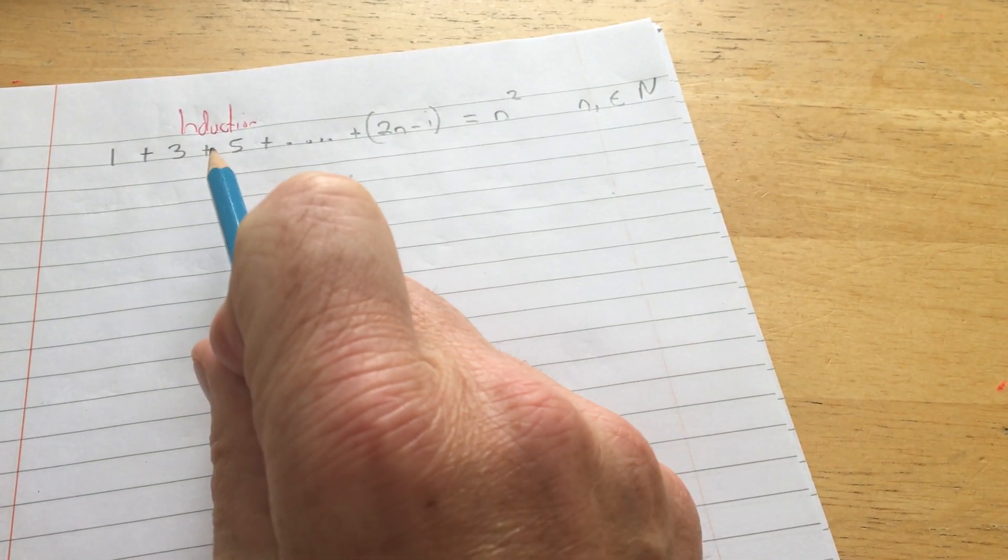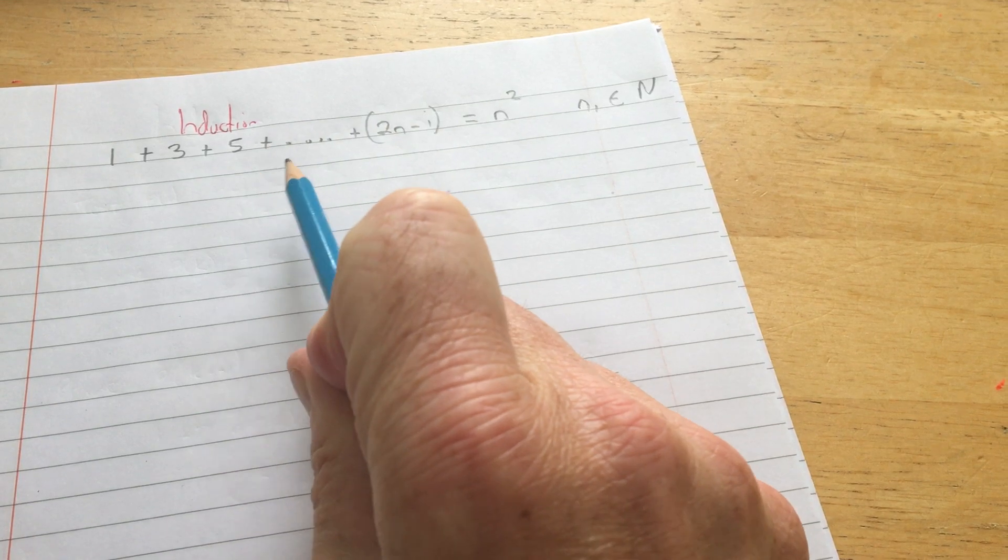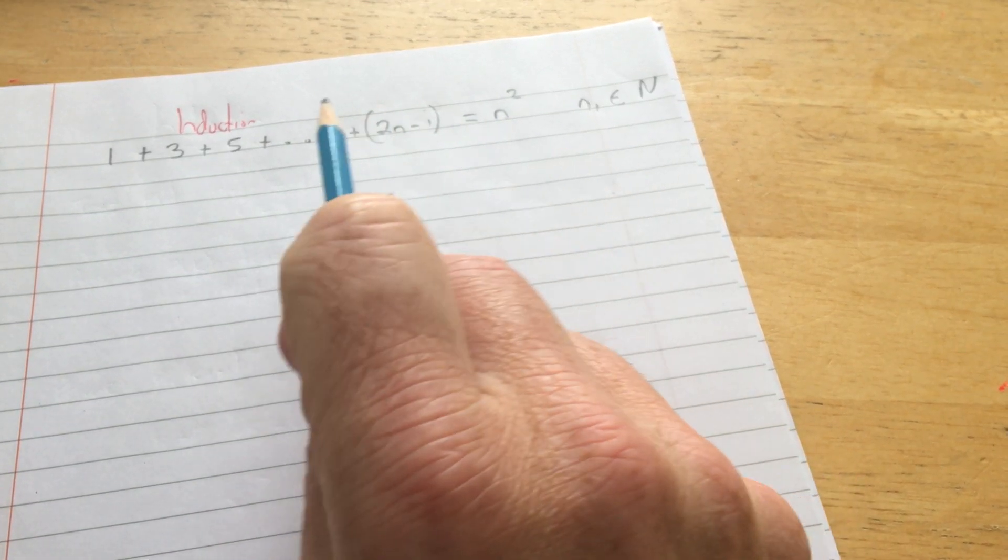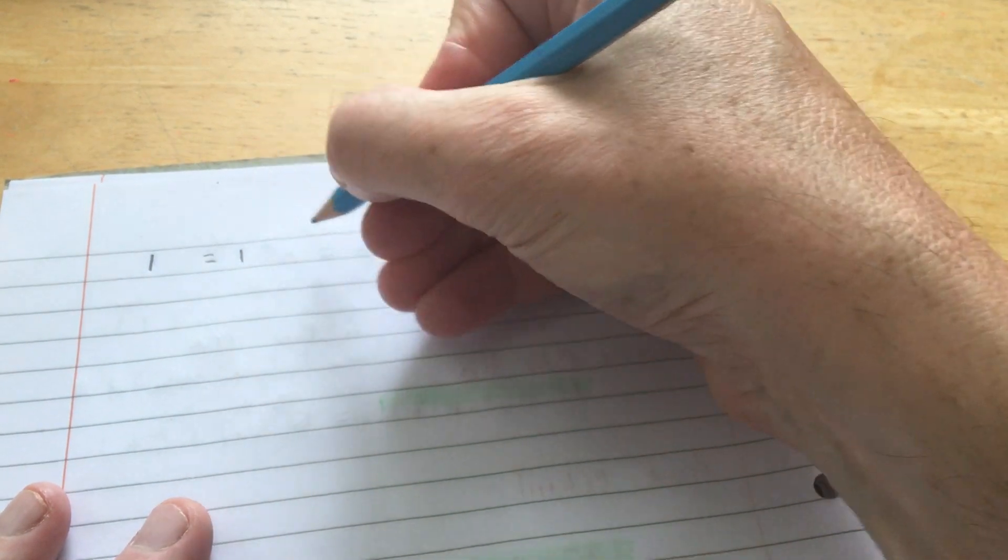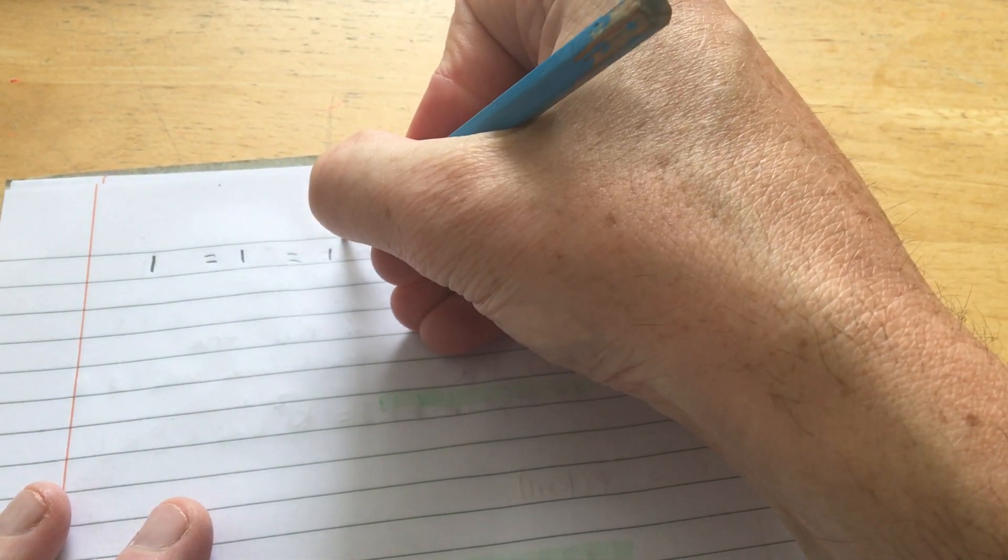So you're trying to show that the sum of the first n odd numbers is n squared. So let's look at it from this point of view. Here's the first odd number. That's actually the same as 1, which is the same as 1 squared.